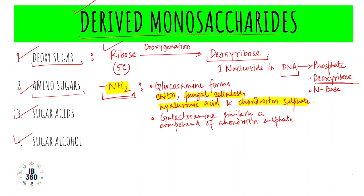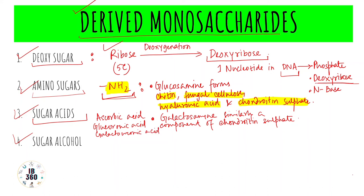The third category is sugar acids. Ascorbic acid is a sugar acid. Glucuronic acid and galacturonic acid are also sugar acids. In fact, glucuronic acid and galacturonic acid both occur in mucopolysaccharides.